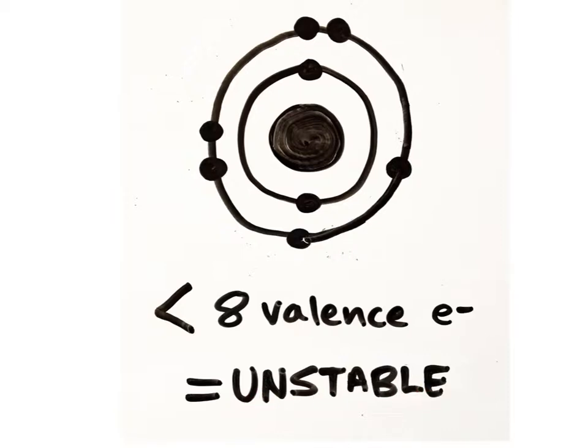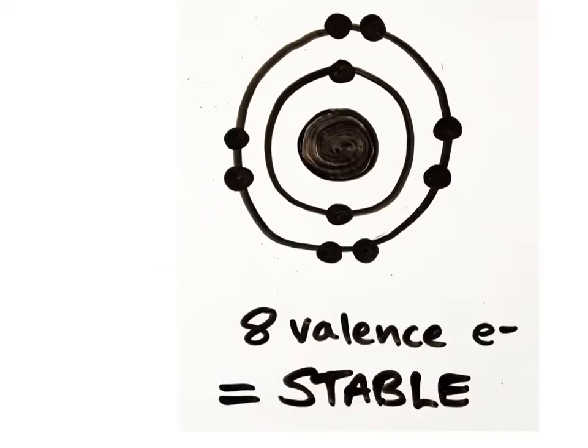Unstable atoms have less than eight valence electrons and will be more likely to react with other atoms in order to form chemical bonds with them and, as a result, more stable products. Because of these bonds, each atom will end up having eight valence electrons.